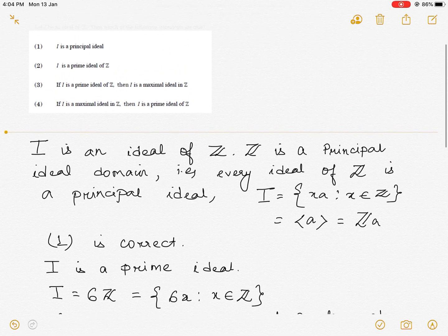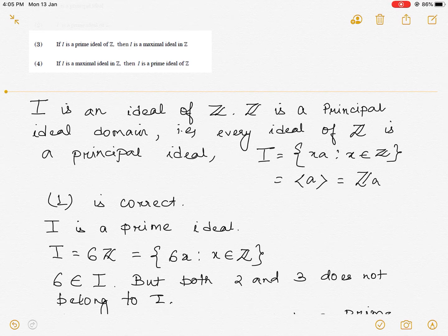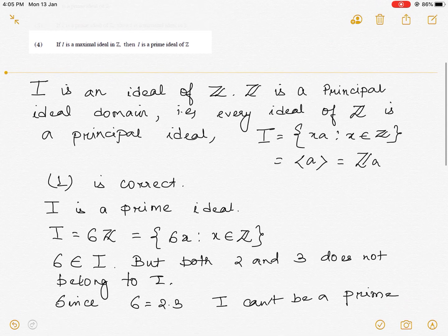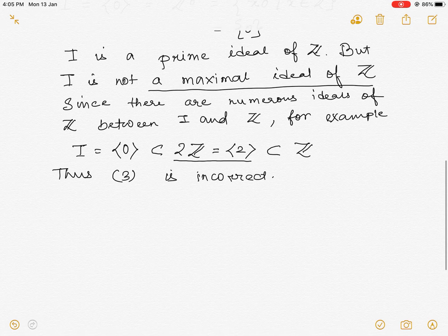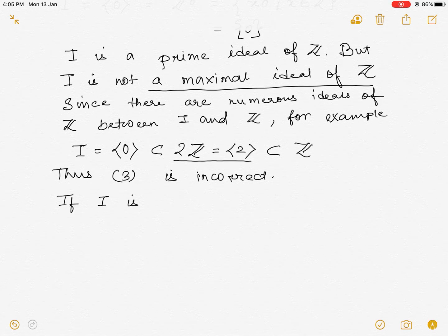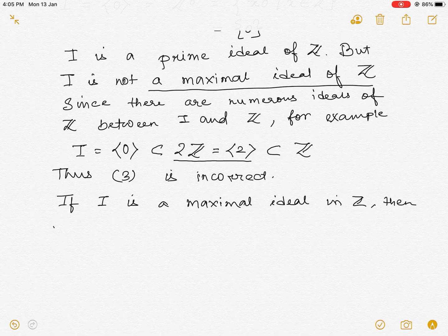Now, for the fourth option, we are given that if I is a maximal ideal in Z, then it is a prime ideal in Z.